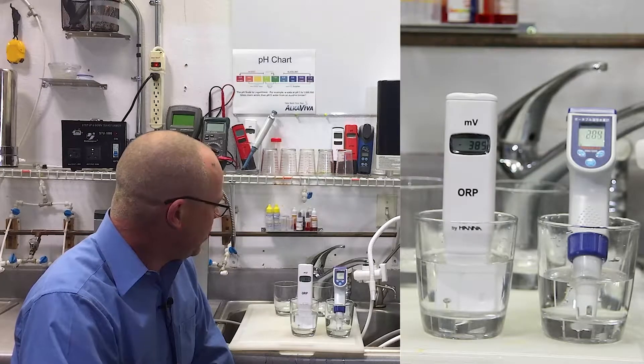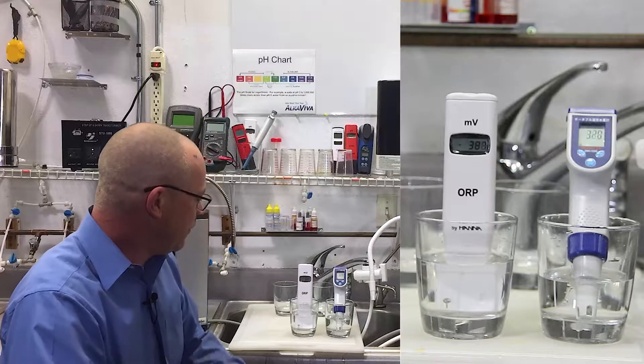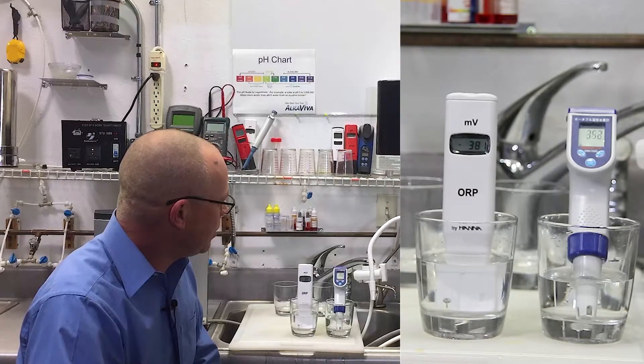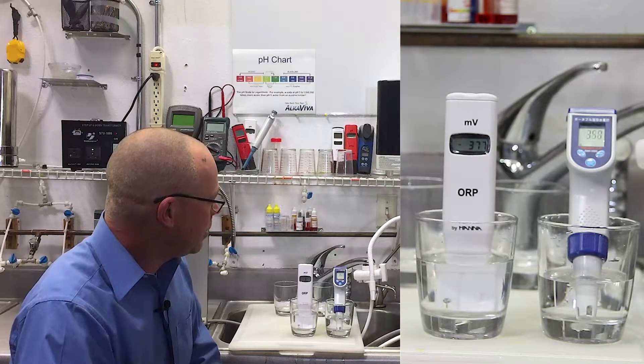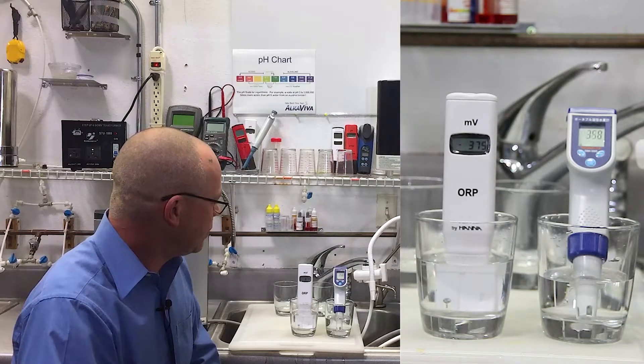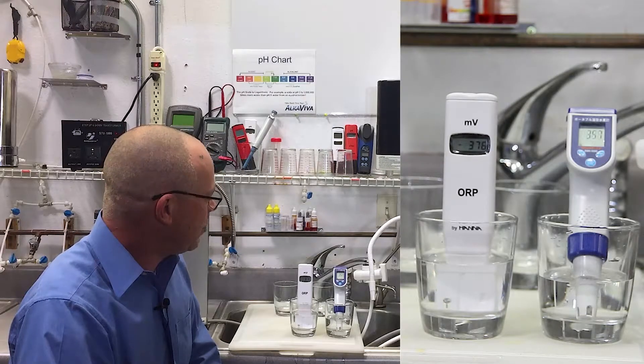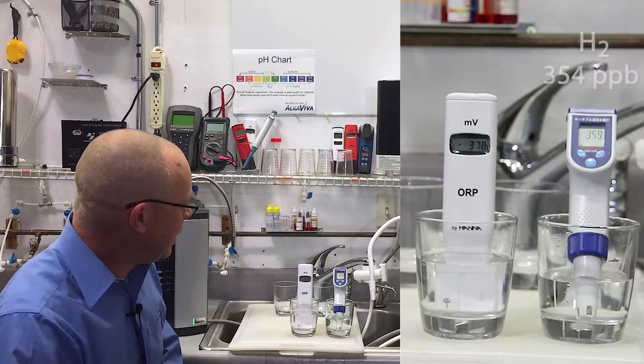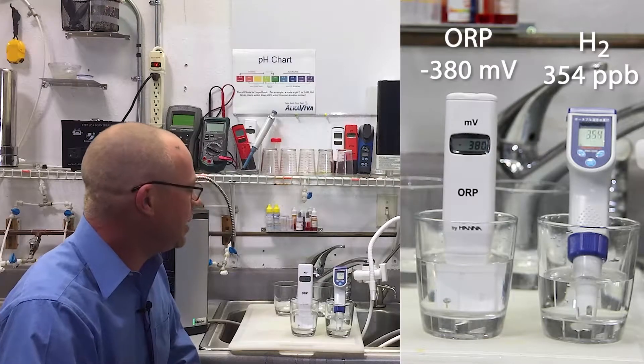The ORP right now is at negative 388. It might move a couple points. The H2 is right now at 355 parts per billion and going up slowly. I'll give it just a second and see where we go. Molecular hydrogen is stabilized at 356 parts per billion. ORP is at negative 380.